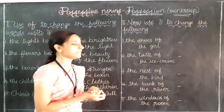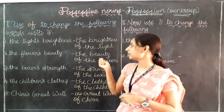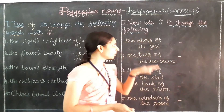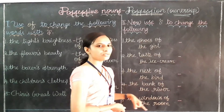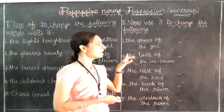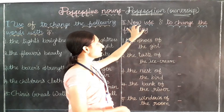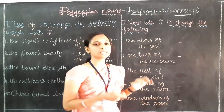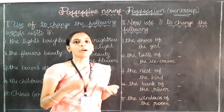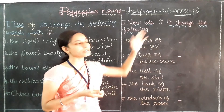Now let's do the second part. Here the sentences are written using 'of.' Now we are going to do the opposite — we will change the possession by using apostrophe-S to show ownership.